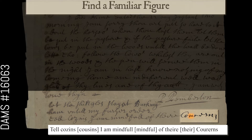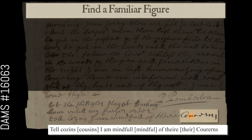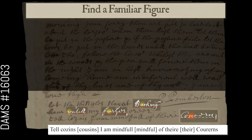Similar to how 'mindful' helped with our other uncertain word, look for other examples of the letter in words you've already transcribed. Look at how other U's meet the baseline — the line which runs along the bottom of the words — in a more rounded shape, while our character in question is more pointed.